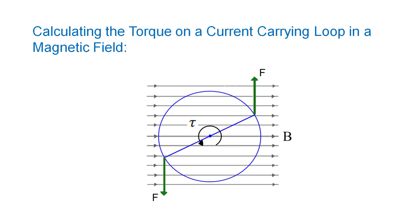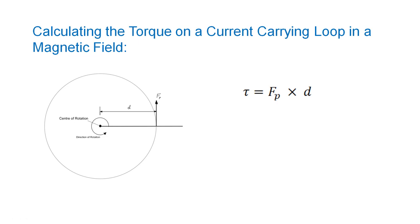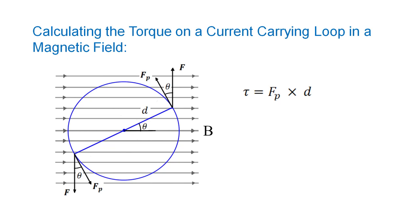These forces will be equal in magnitude but opposite in direction. However, as the forces act on opposite sides of the axis of rotation, they will both tend to turn the coil in the same direction. Therefore, we need only concern ourselves with the magnitude of these forces. If the loop is not parallel to the magnetic field direction, the formula for torque will be TAU equals F multiplied by D cos theta, where theta is the angle between the perpendicular to the straight line distance from the center of rotation to the point at which the force is acting, and the direction of the force. This equals the angle between the plane of the loop and the magnetic field direction, as can be seen in the diagram.